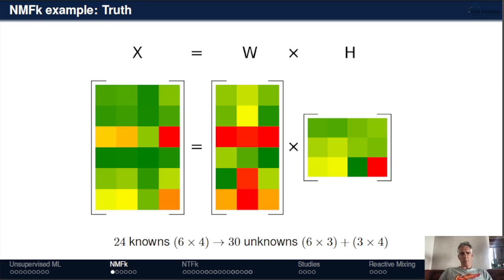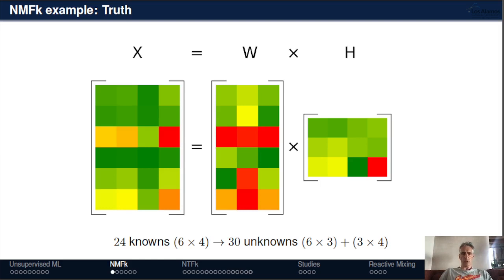Here is a simple example for non-negative matrix factorization, where we have matrix X reconstructed by two matrices W and H. When you multiply W times H, you reconstruct X. During reconstruction, you know only the X matrix — you don't know W and H. So you have 24 unknowns (the values in the X matrix), but don't know any values in W and H, and also don't know the number of rows in W and columns in H. We need to reconstruct all this information during analysis.